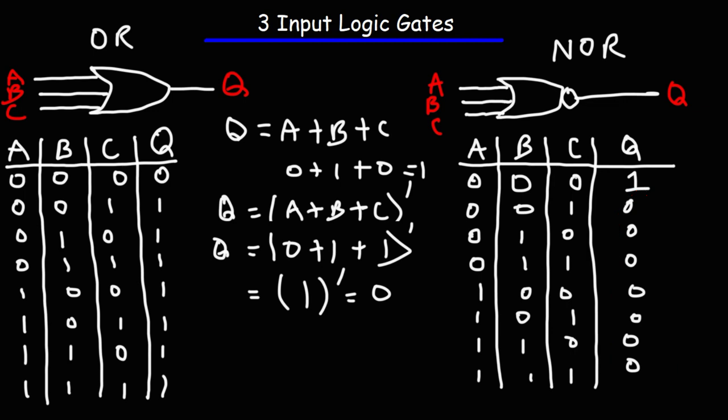To summarize everything: for the three-input AND gate, the output is on only when all inputs are on. For the three-input NAND gate, the output is off only when all three inputs are on. For the three-input OR gate, the output is off only when all three inputs are off. For the three-input NOR gate, the output is on only when all three inputs are off. Knowing these rules, you can easily fill out any truth table for these gates.